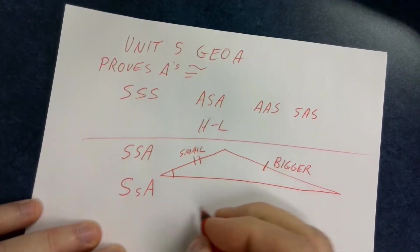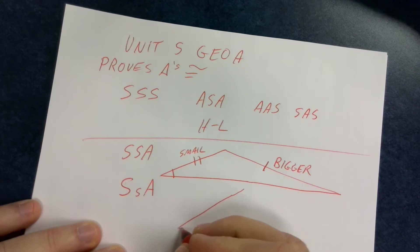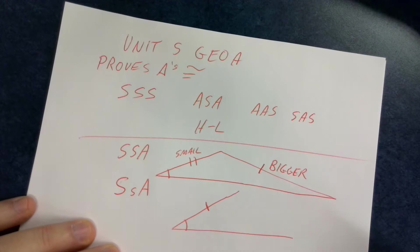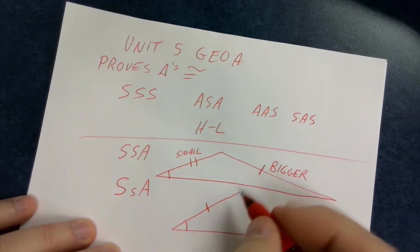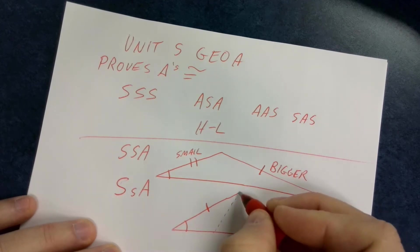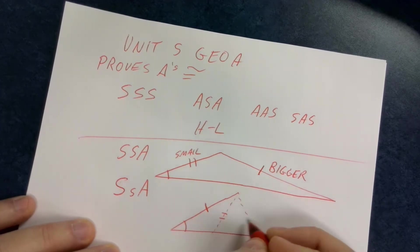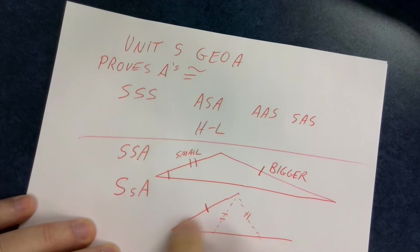The reason why just any side side angle doesn't work is if we have a triangle looks like this and this is one of our sides and this is our angle. It's this remaining side that kind of can mess us up because we could have it like this or we could have it like that.